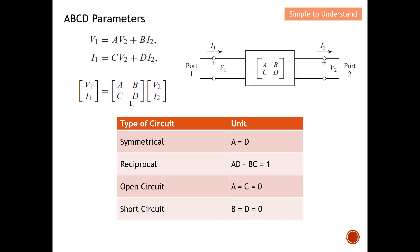Let's understand the types of circuits. If the circuit is symmetrical, then A will be equal to D, which means you can reverse the orientation — either input or output — without making any difference for a symmetric circuit. For a reciprocal circuit, AD minus BC must be equal to one.